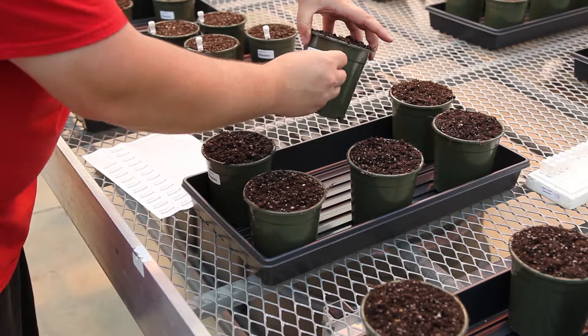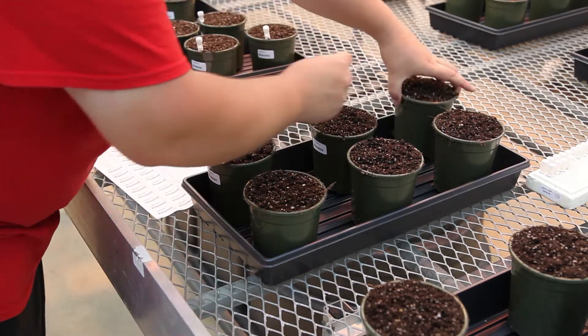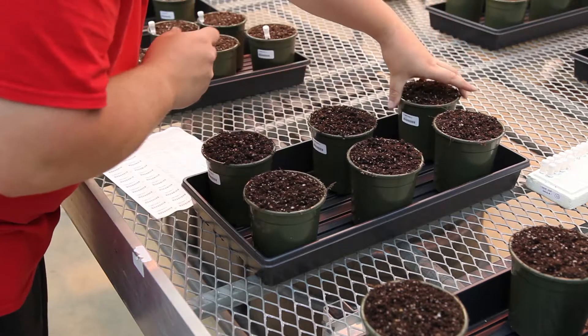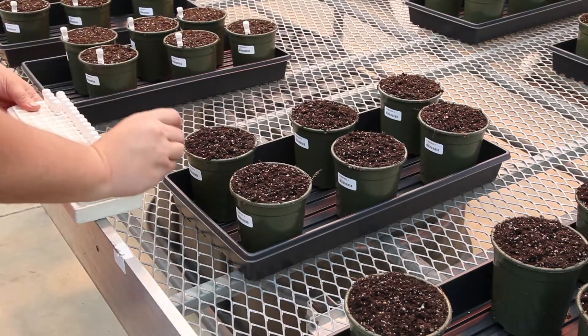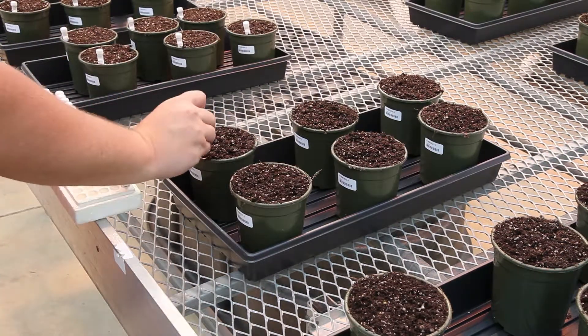Begin the planting process by labeling the pot with the date and the appropriate seed stock number. Match the stock number on the seed vial to the label on the pot.